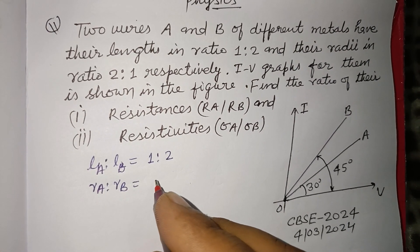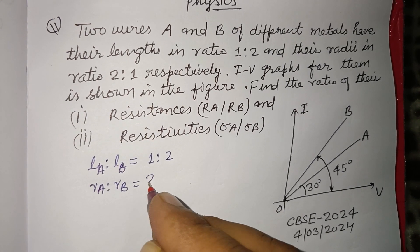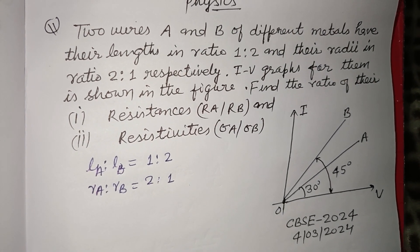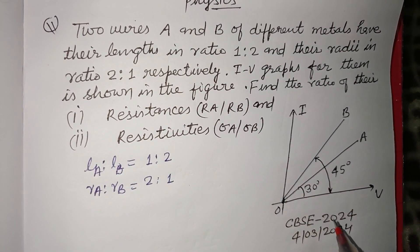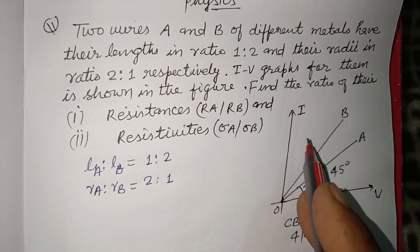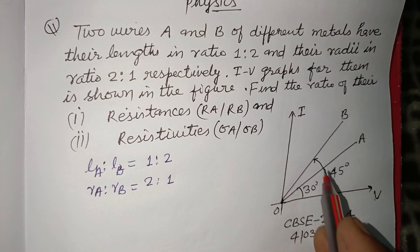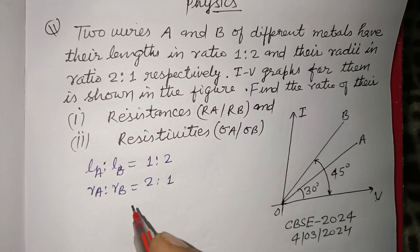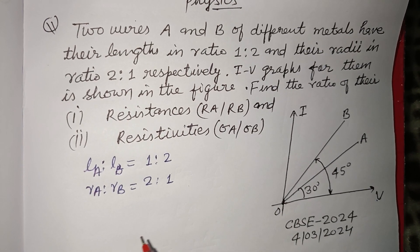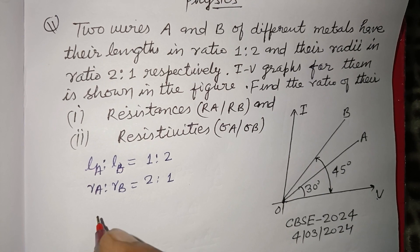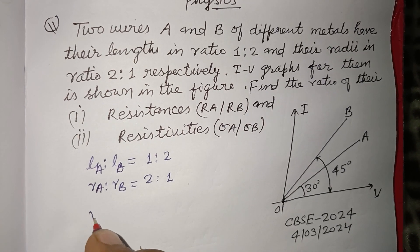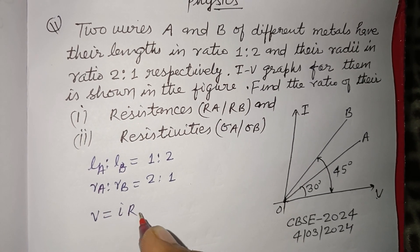An I-V graph between voltage and current is given. In the figure, find the ratio of the resistances. Using Ohm's law, V = IR, therefore R = V/I.